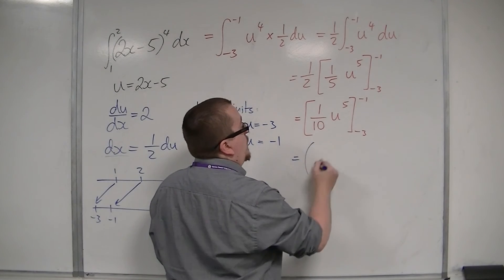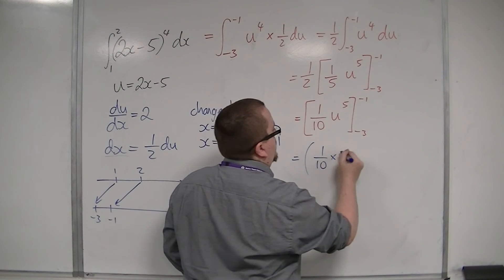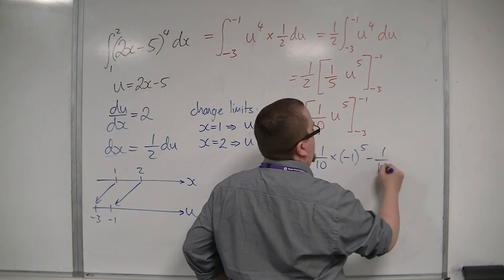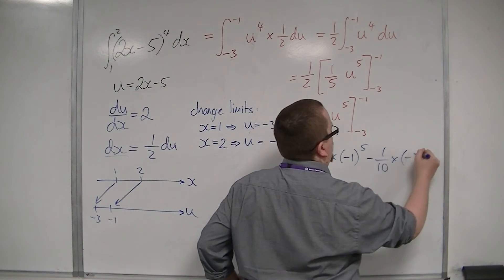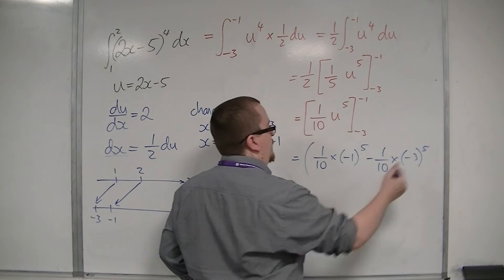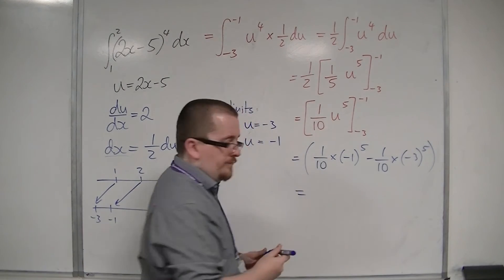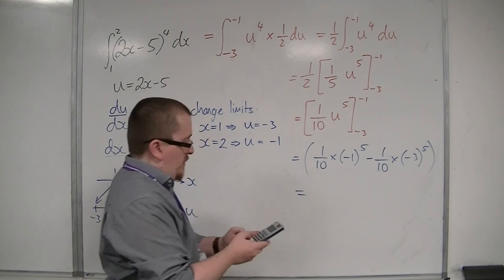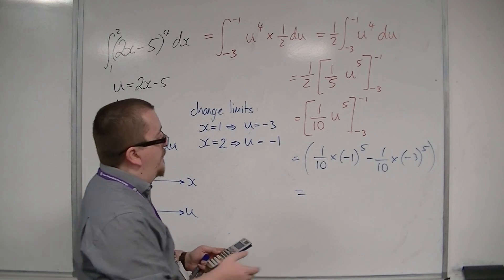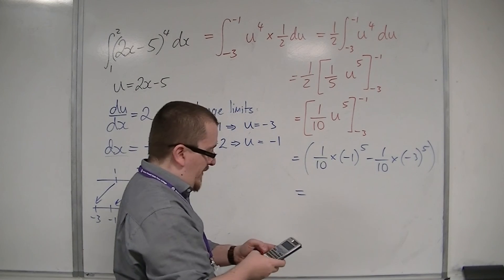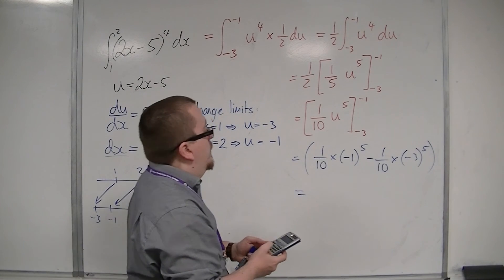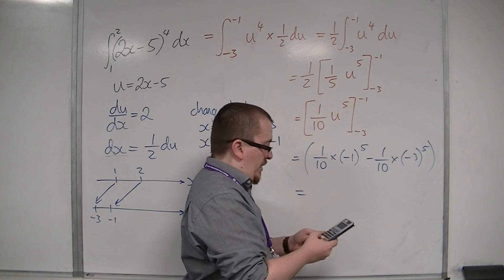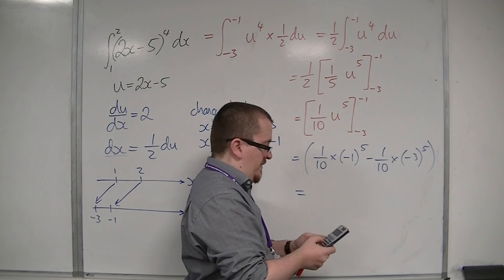So, this is equal to 1 tenth times minus 1 to the power of 5. Take away 1 tenth times minus 3 to the power of 5. So, we've got minus 1 to the power of 5 is minus 1, so minus 1 tenth.